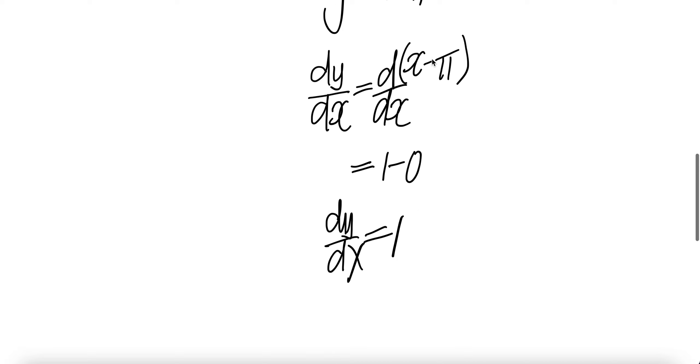The derivative of a difference is the difference of derivatives. The derivative of a constant is zero, and the derivative of x is one.